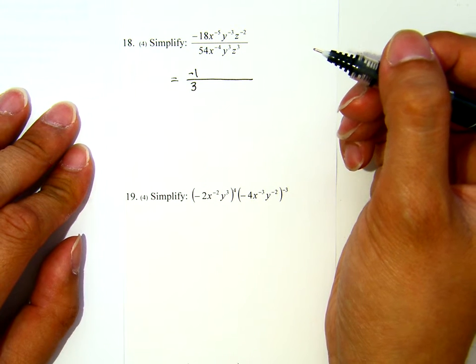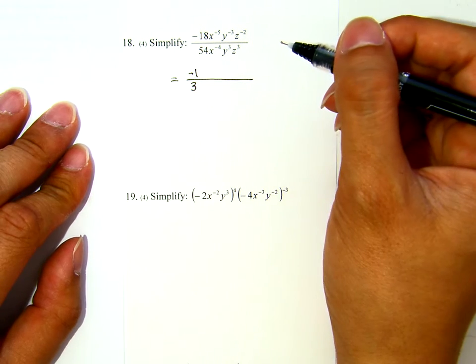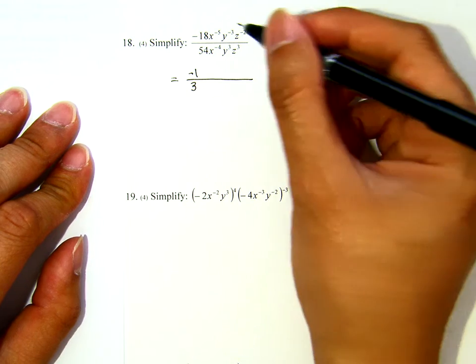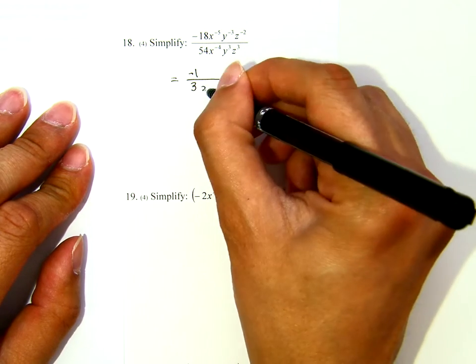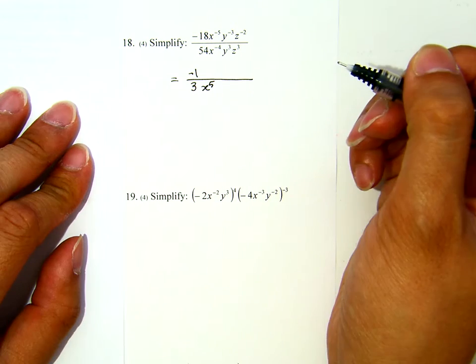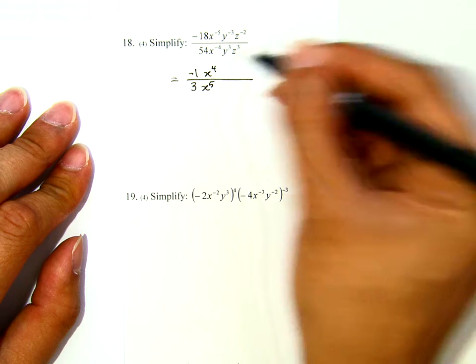Now, what happened to the x? We have two negative exponents here. What I can do is the following. If it is negative exponent on the top, I will bring it down to make it positive exponent. If it is negative exponent at the bottom, I will bring it up to make it positive exponent.